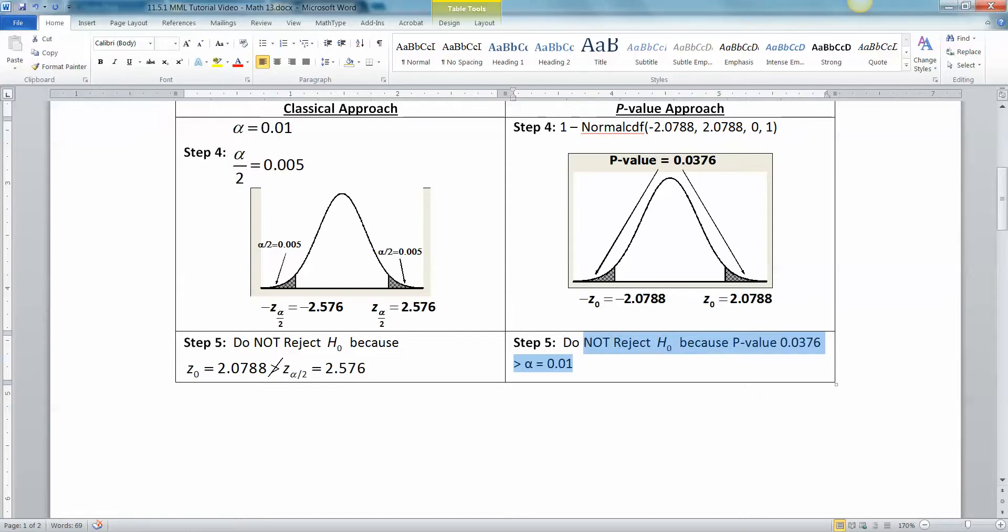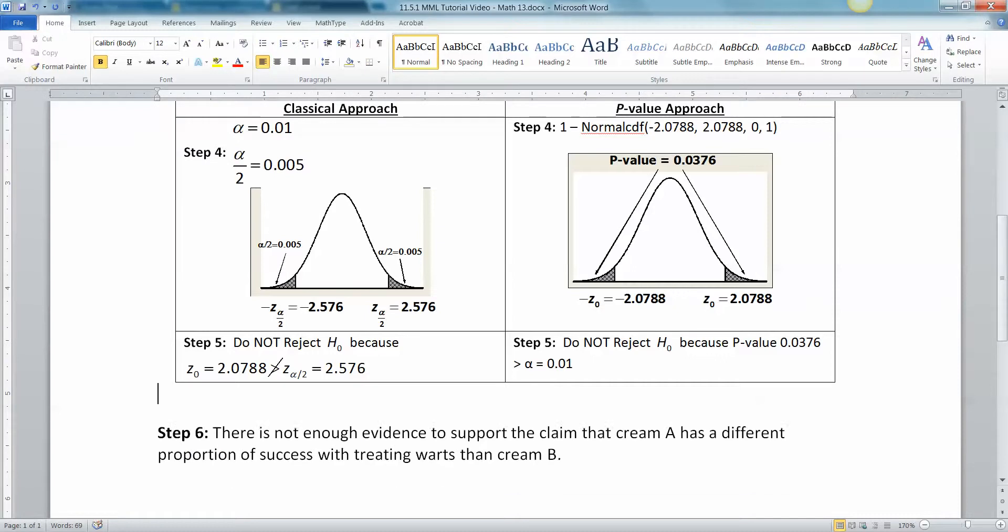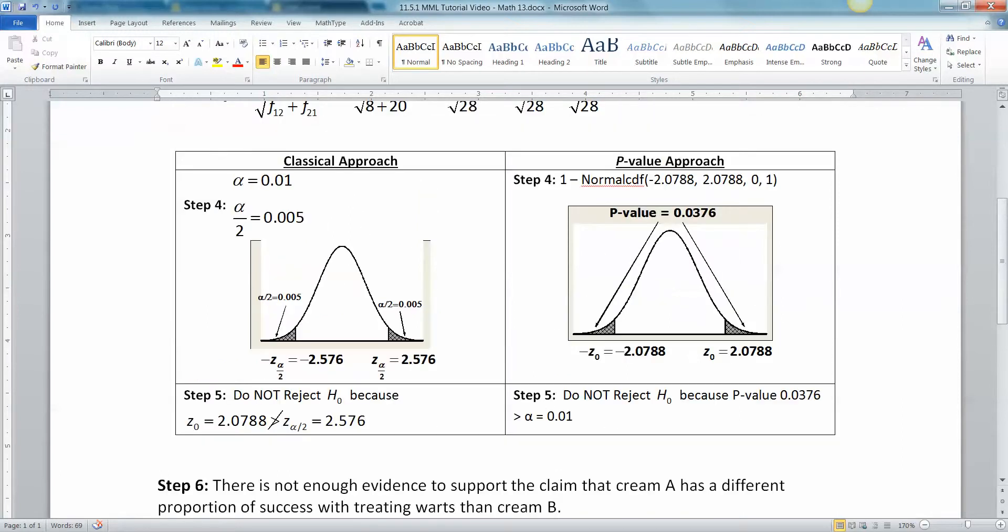So you do not reject because your p-value is greater than your alpha. That's the easier way to think of it. Or you don't reject because your test statistic, 2.0788, is not greater than your upper critical value, or lower than your lower critical value. But we don't care about that, because it's not negative on this one. And since we're not rejecting the null hypothesis, that means there is not enough evidence to support the claim that cream A has a different proportion of success with treating warts than cream B. And we're done.